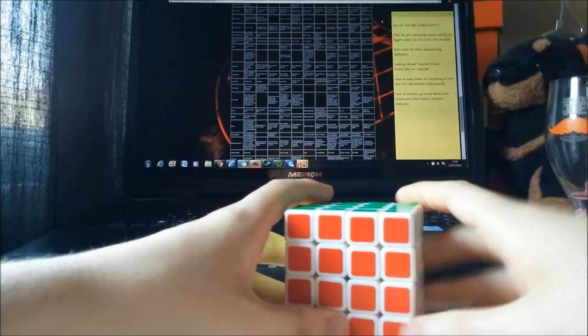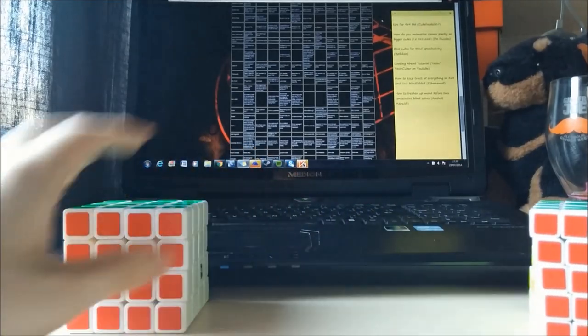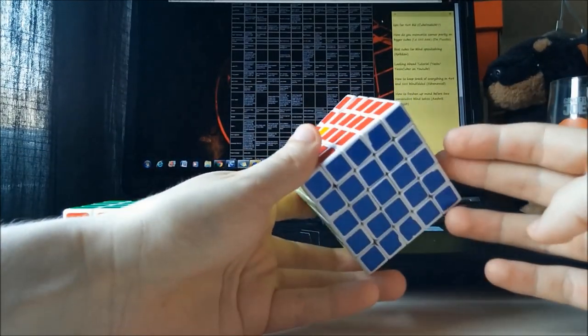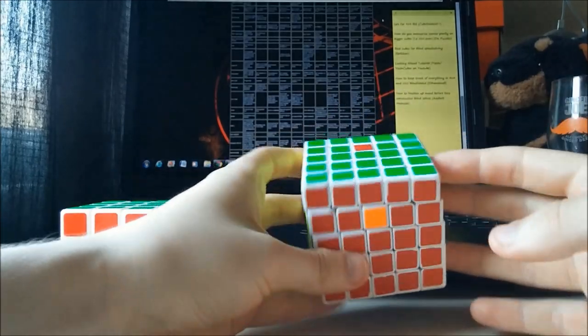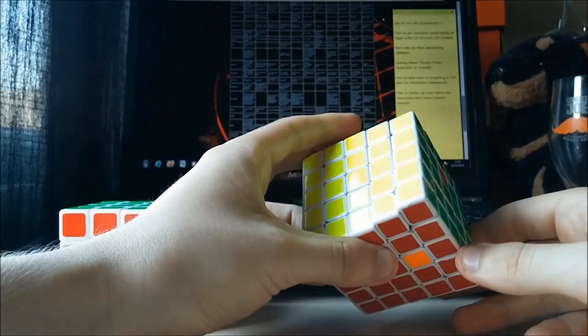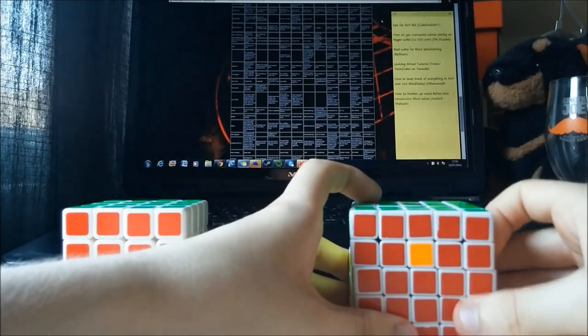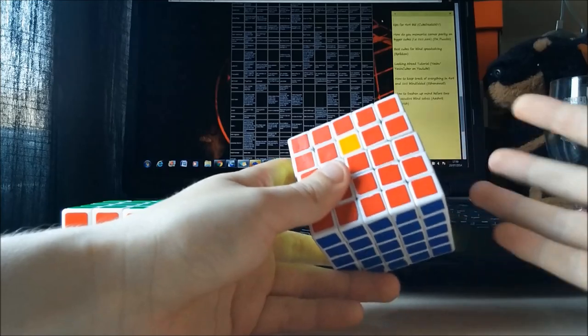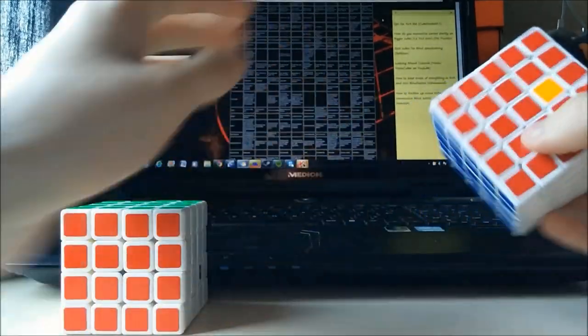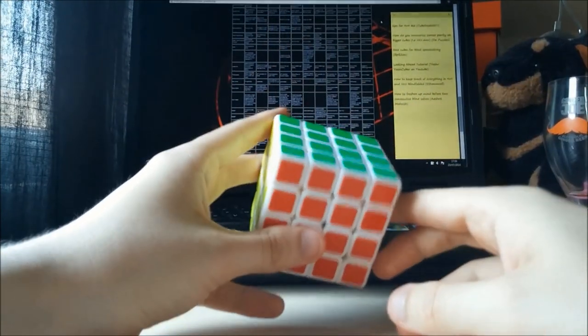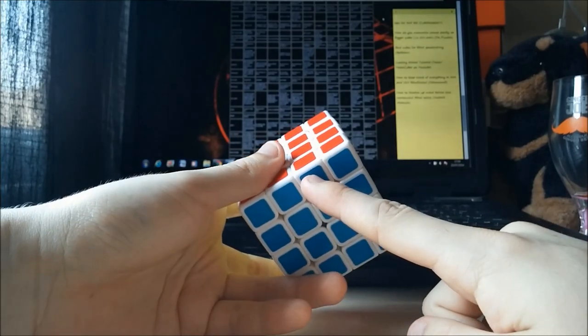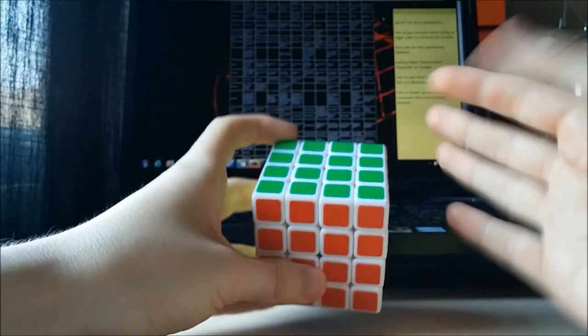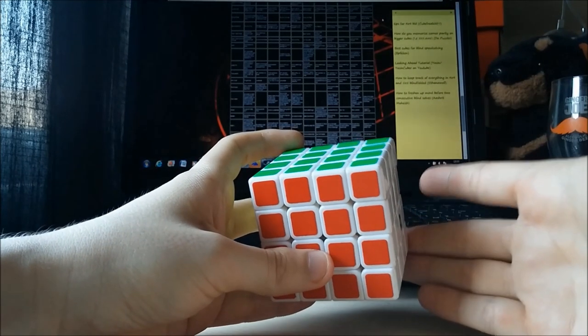Okay, how to keep track of everything in 4x4 and 5x5 blindfolded. Centers is the easy part for that. If you really want to make sure you've got everything, you can just count the centers. How many are solved and then count how many targets you've got, whether you've got a floating buffer or a fixed buffer. And it's just simple subtraction. The only problem I can really think of is wings, because wings can be quite hard sometimes.